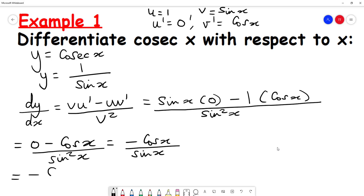Now, I'm going to separate this as minus cosine of x over sine x, and times that by 1 over sine x.